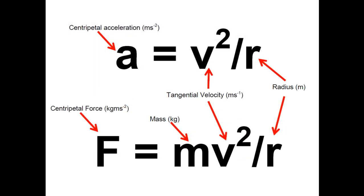Finally, this is just a slight variation on the previous equation. Instead of having omega, I've replaced omega with the tangential velocity. So centripetal acceleration is equal to v squared over r. And because f equals ma, f equals mv squared over r.